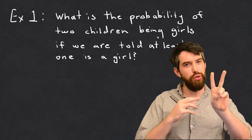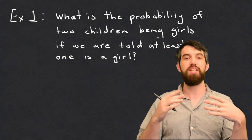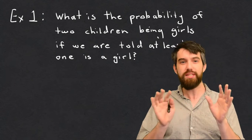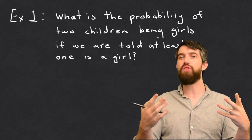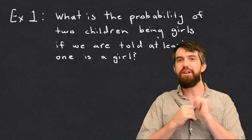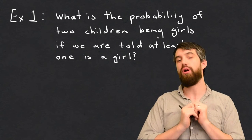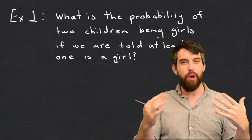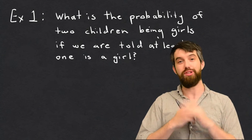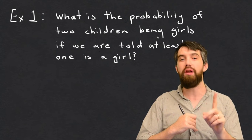In this video, I want to explore two very similar but slightly different examples that illustrate some of the complexities of conditional probability. In the first example, we have a couple with two children. We've been told that at least one of those two children is a girl. The question is: what is the probability that both of their children are girls, given that we know at least one of them is a girl?